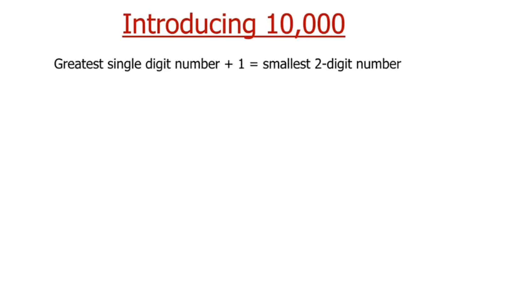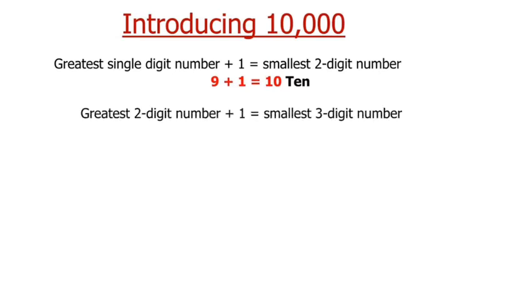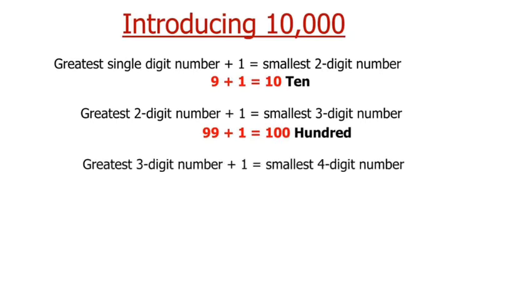Before introducing you to 10,000, let us see: the greatest single digit number plus 1 will give us the smallest 2 digit number, i.e. 9 plus 1 equals 10. Greatest 2 digit number plus 1 equals smallest 3 digit number, which means 99 plus 1 equals 100. Similarly, greatest 3 digit number plus 1 equals smallest 4 digit number, i.e. 999 plus 1 equals 1000.